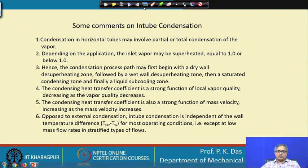To recapitulate: in-tube condensation is completely different from and more complex than condensation outside the tube, due to the presence of different flow regimes. The heat transfer coefficient can vary quite a lot along the length of the tube. Correlations must be used to calculate it, and what kind of correlations will be discussed in the next lecture. Thank you.